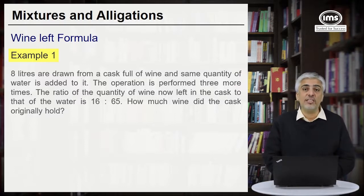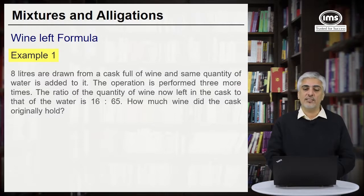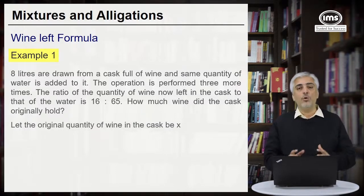The ratio of quantity of wine now left in the cask to that of water is 16 is to 65. That means after doing this four times the ratio of wine to water is 16 is to 65. How much wine did the cask originally hold? So what was the original capacity of the cask?